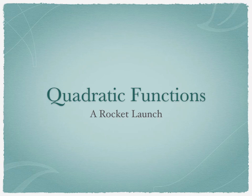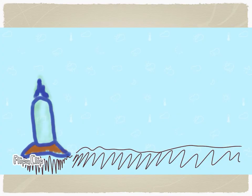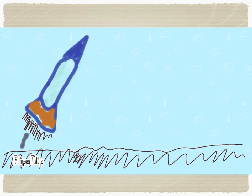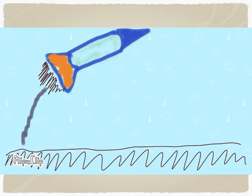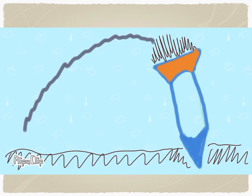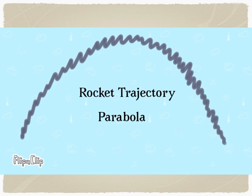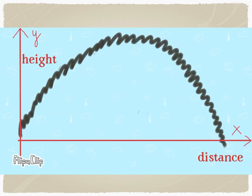This video introduces quadratic functions and one of its applications: a rocket launch. A rocket trajectory actually forms a shape called a parabola, and you can map a parabola onto an xy coordinate where x is the distance and y is the height of a rocket.